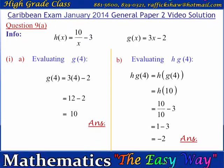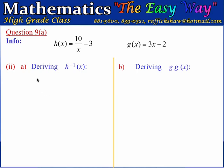That's the answer for part 1. In part 2 we are asked to derive h to the minus 1 of x, and then in part b we want g of g of x. h to the minus 1 of x is the inverse of h of x. The relationship is that the domain of h of x equals the range of h to the minus 1 of x, and the range of h of x equals the domain of h to the minus 1 of x — there is an interchange of the domain and the range.